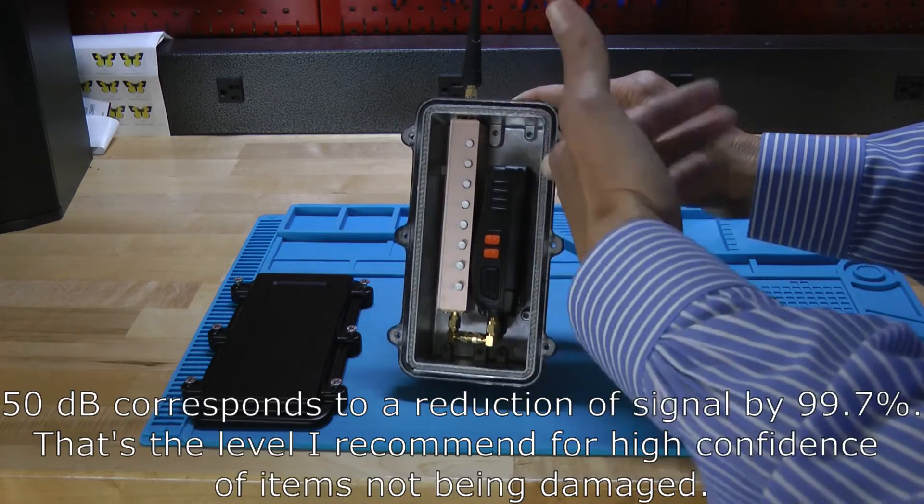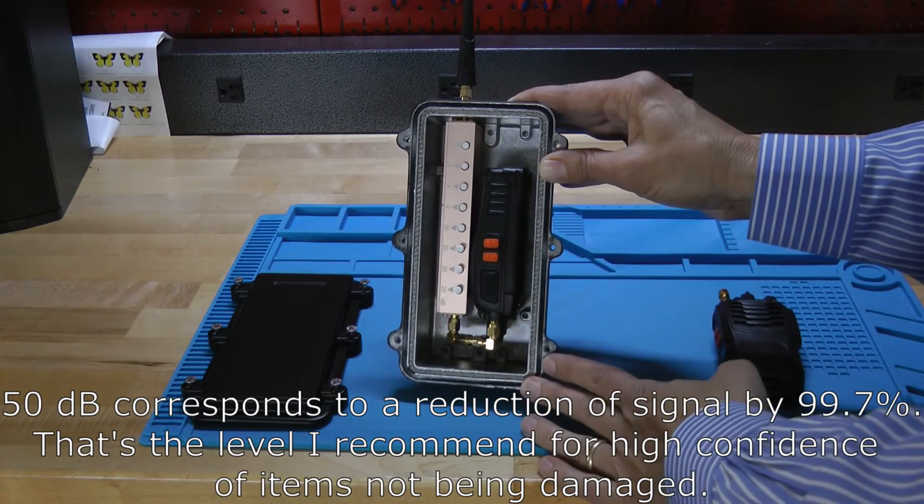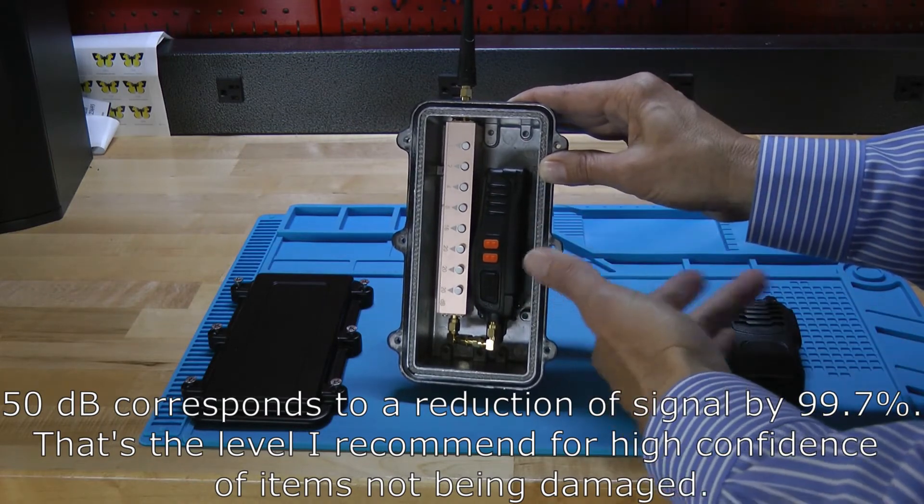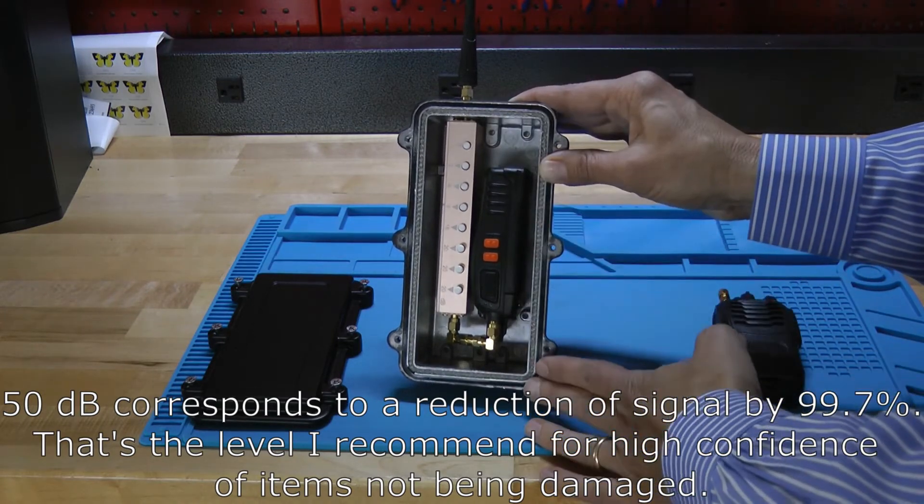If you know that you have about 50 dB or about 55 dB of shielding, that tells you that your Faraday cage is a very good Faraday cage and you know that the items inside are protected.